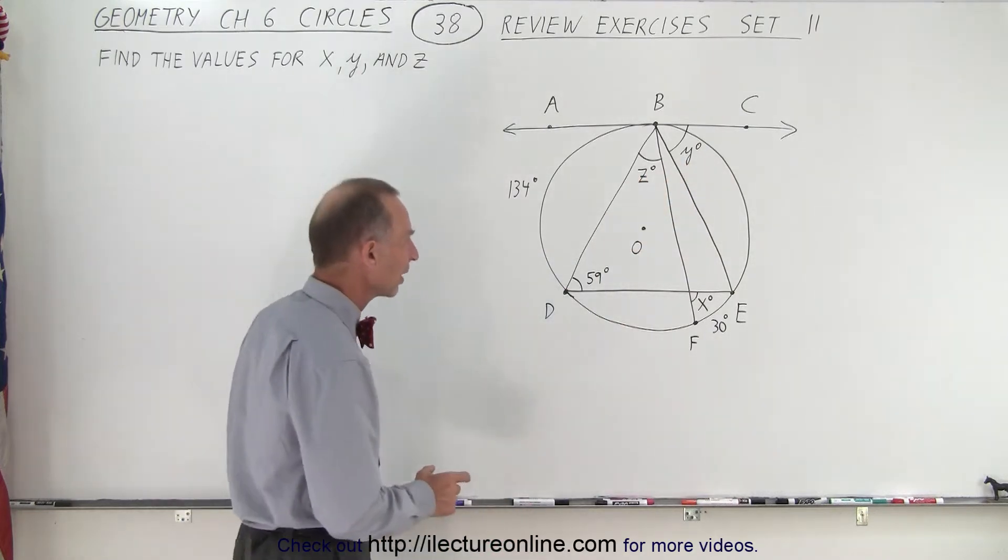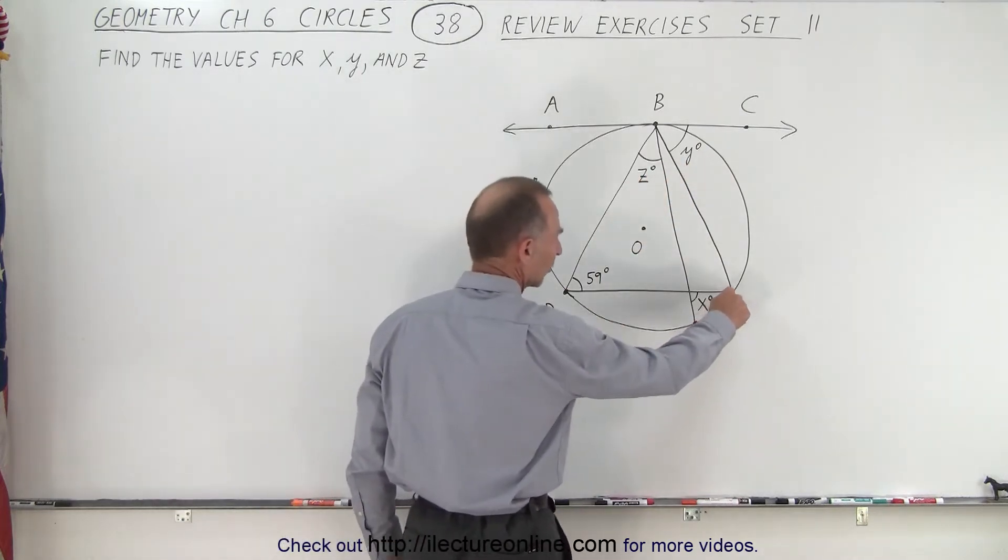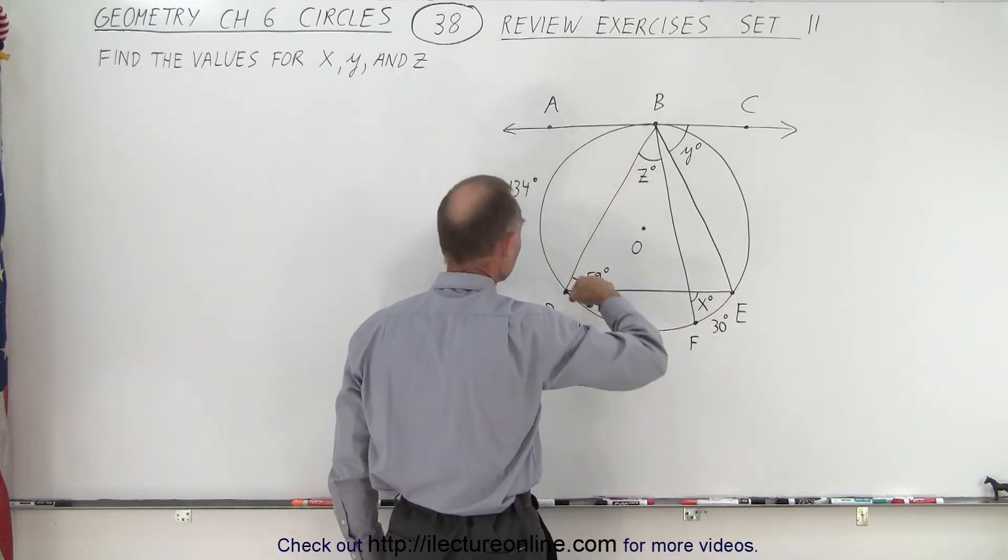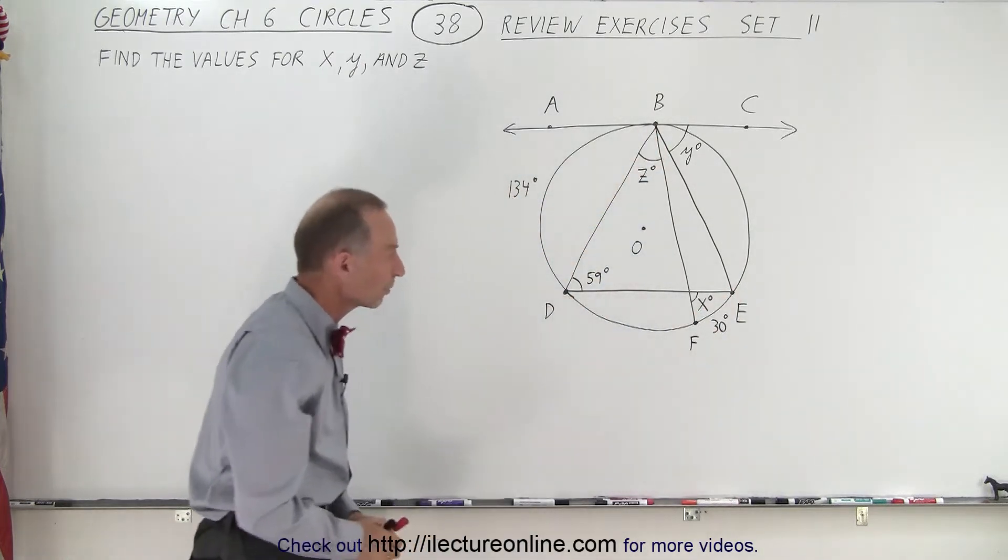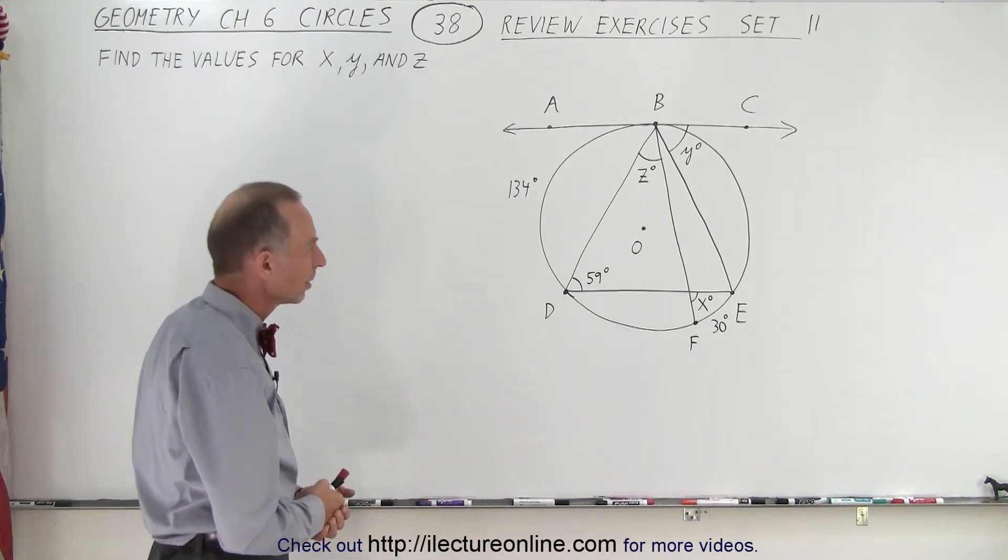They give us some information. They tell us that the measure of this arc here is 30 degrees, and the measure of the arc from B to D is 134 degrees. So, how do we find the value for x?